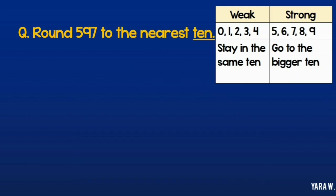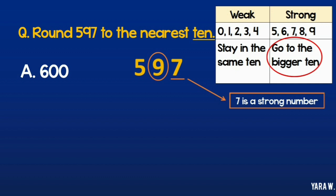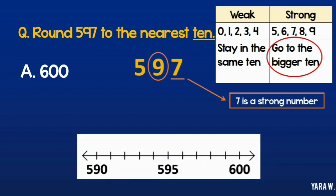Look carefully at this example. I am rounding 597. Step 1: Circle the tens, which is 9. Step 2: Underline what's after it, which is 7. Of course 7 is a strong number. So it means I am going to go to the bigger 10. Notice that here, the next 10 is going to take me to 600. Since there are no more tens after 590 in the 500s, I will need to move to the 600.